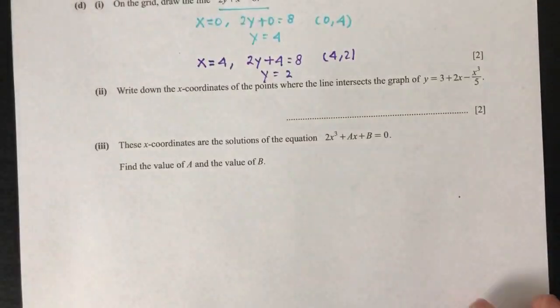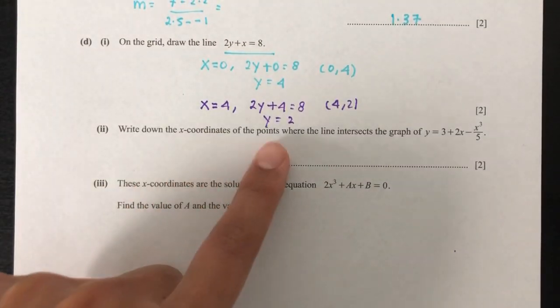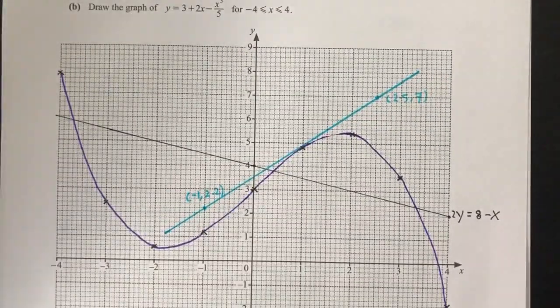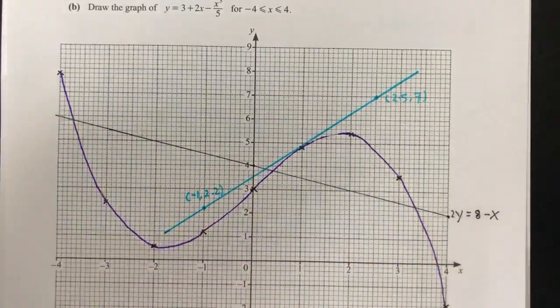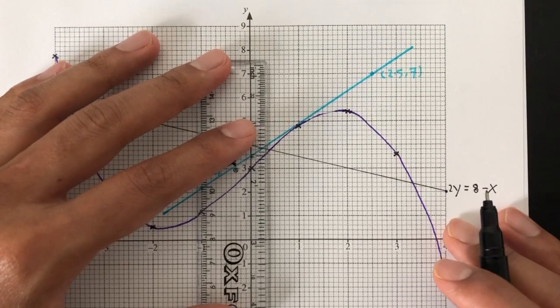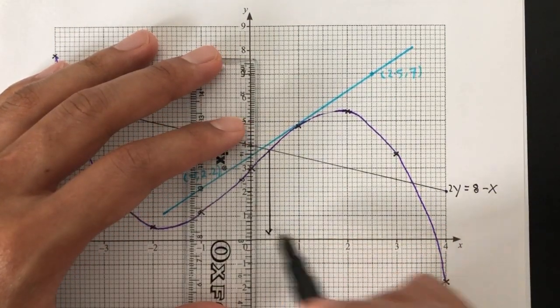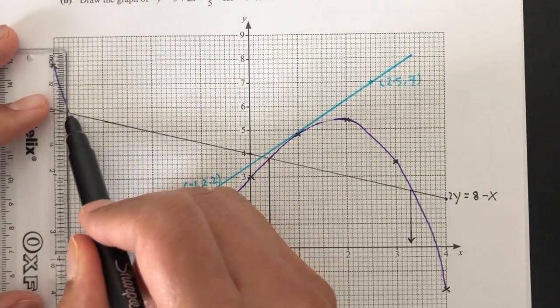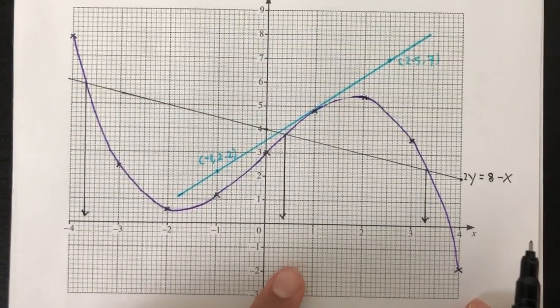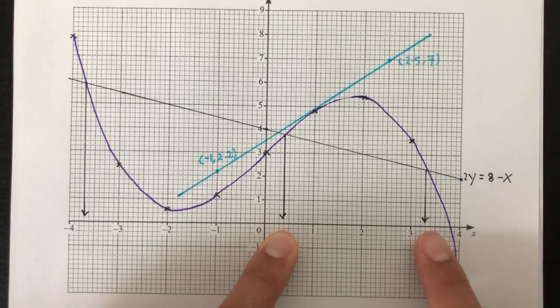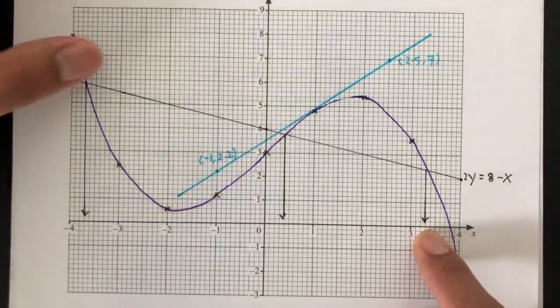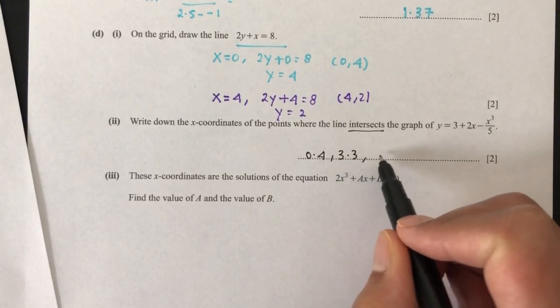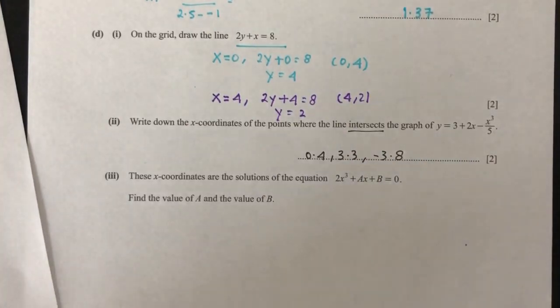Now once you have your line, let's see what's the question. Write down the x coordinates of the point where the line intersects the graph. So you just have to see where it cuts your graph. It cuts my graph at this point, at this point, and at this point. So you basically connect these to your x-axis. Now you just have to take the readings that you can see. The first one should be about 0.4, 3.3, and then minus 3.8. So the x will be 0.4, 3.3, and then minus 3.8. That is pretty straightforward until now.